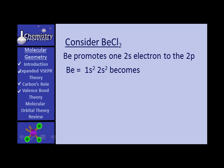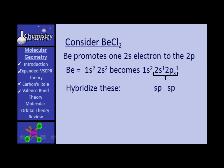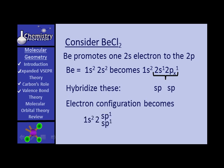Beryllium's electron configuration is 1S2, 2S2, but suppose that becomes 1S2, 2S1, 2Px1. In other words, as it's beginning to come in for collision, there's more energy there, and the energy is expressed by an electron being promoted. Now that S and the Px are hybridized — instead of having a 2S orbital and a 2Px, suppose they hybridize and make two SP hybrids. The electron configuration then becomes 1S2, 2SP1, SP1.